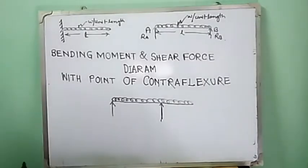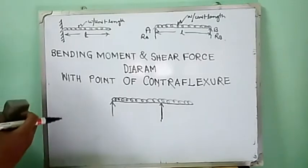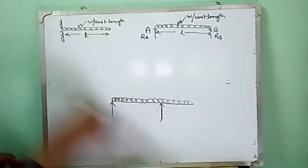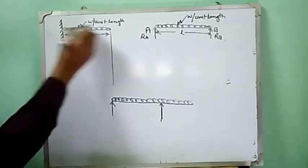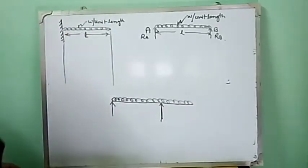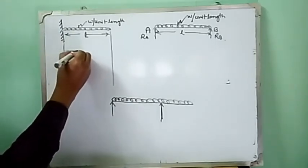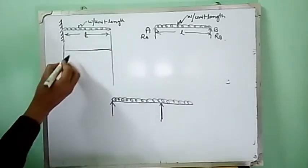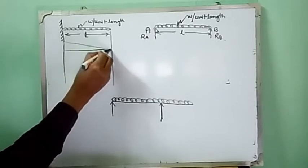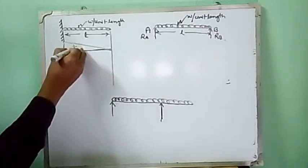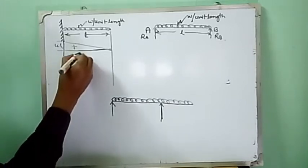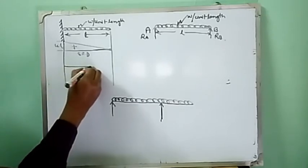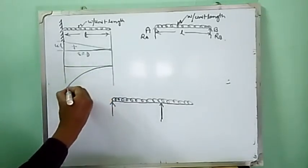In my previous lecture, we have seen that the bending moment is negative in a cantilever beam. Let us take a cantilever beam with span L and intensity of loading W per unit length. If we draw the shear force diagram, we get a straight line, and if we draw the bending moment diagram, we get a parabolic equation.